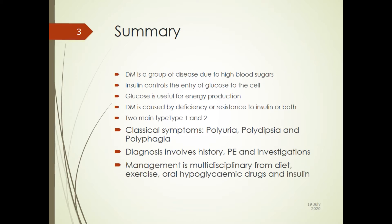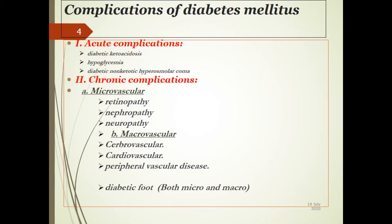Diabetes is a group of diseases caused due to high blood sugars. Insulin controls the entry of glucose into the cell, and glucose is useful for energy production. Without insulin, glucose will not be able to enter the cell. So diabetes is caused by deficiency or resistance to insulin, or both of these conditions.